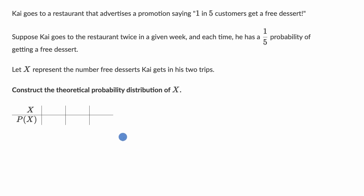Alright, so first let's just think about the possible values that X could take on. This is the number of free desserts he gets, and he visits twice. So there's some world in which he doesn't get any free desserts, so that's zero in his two visits.